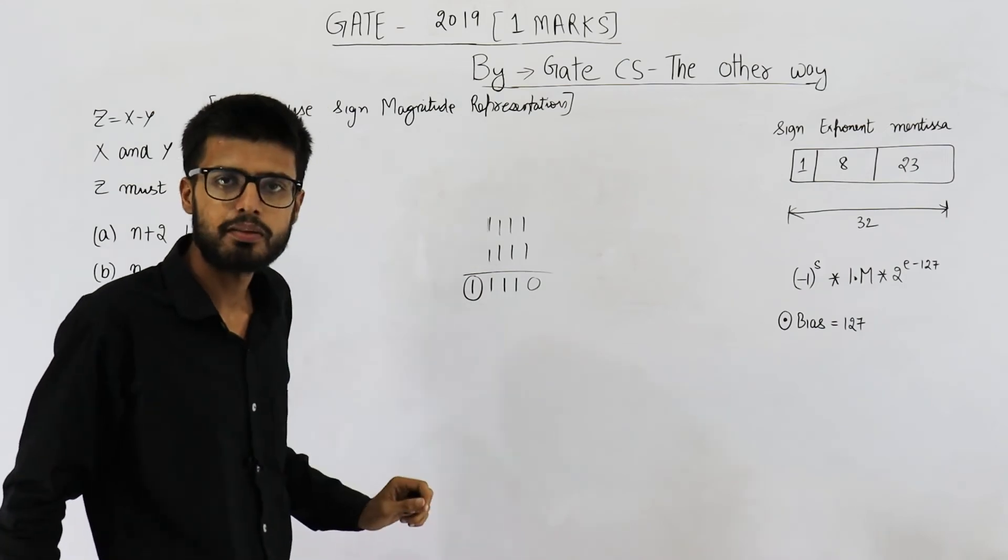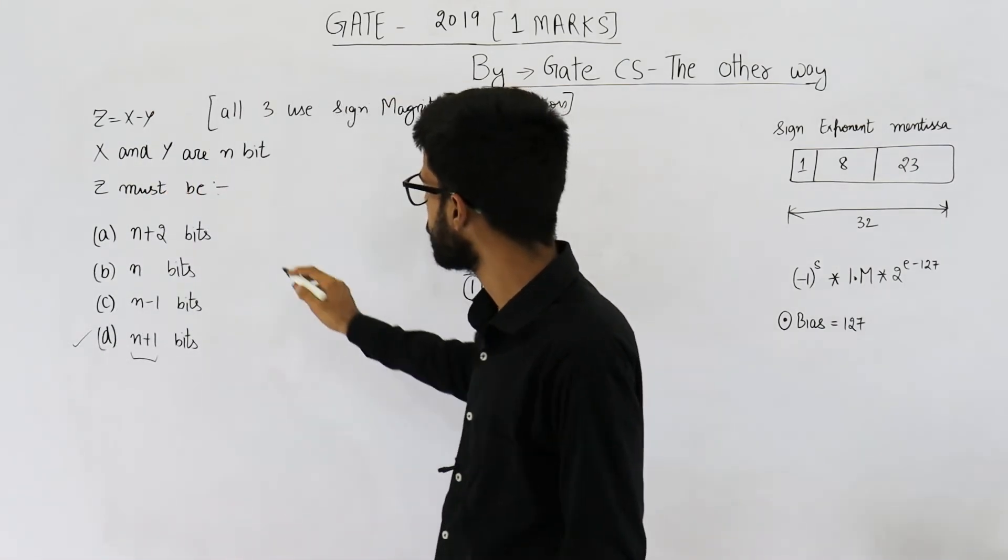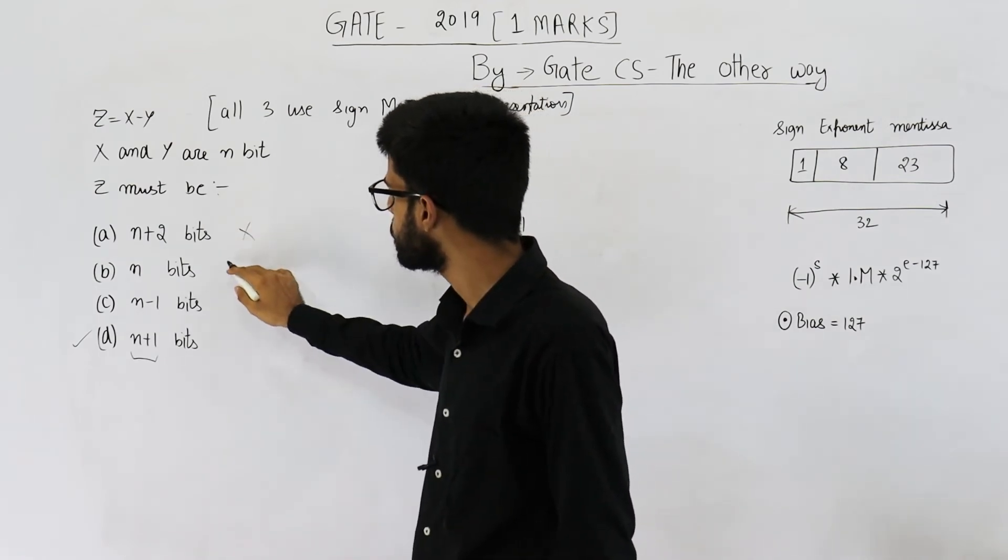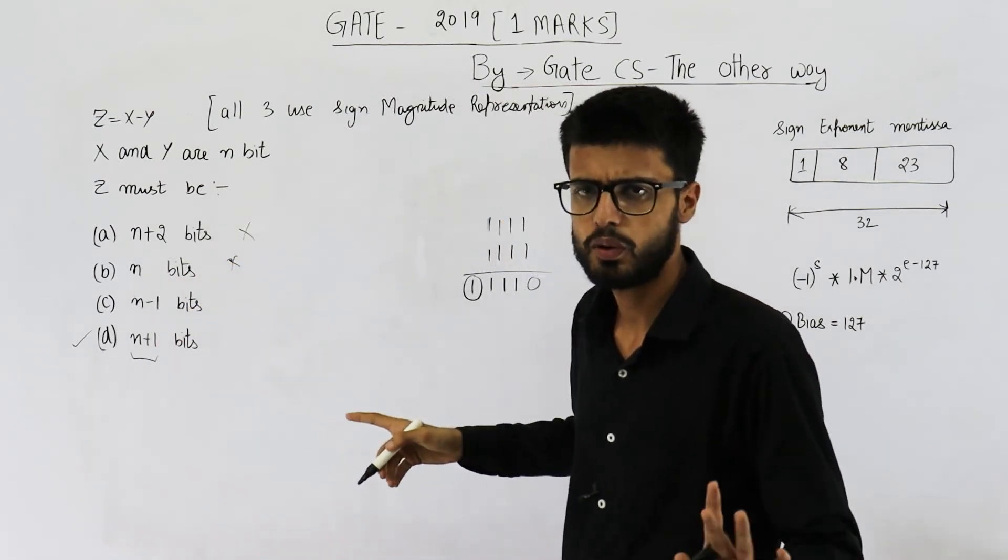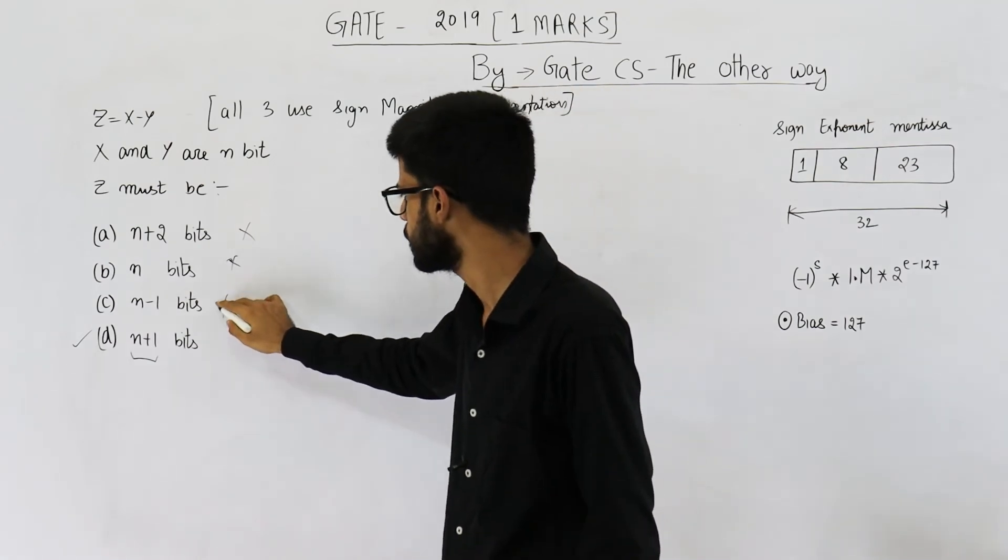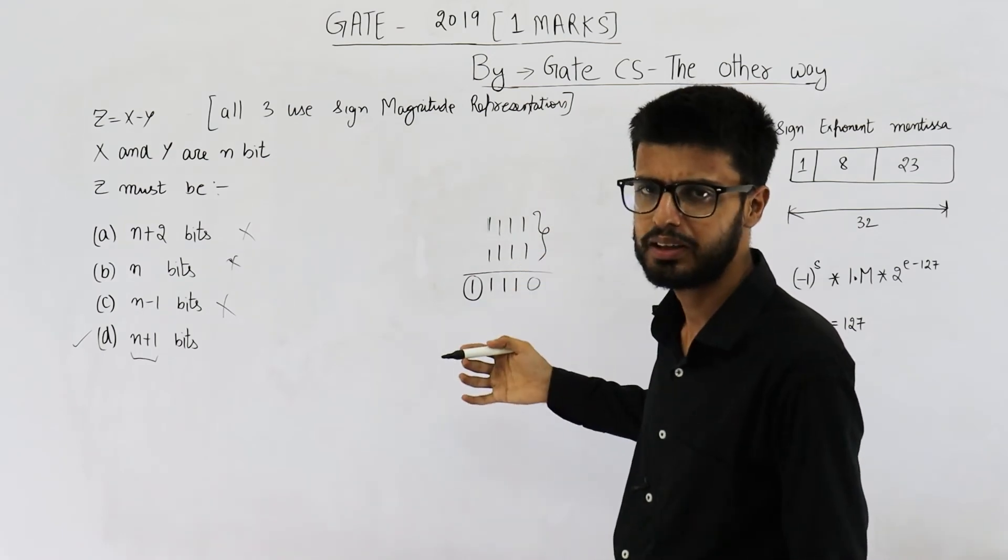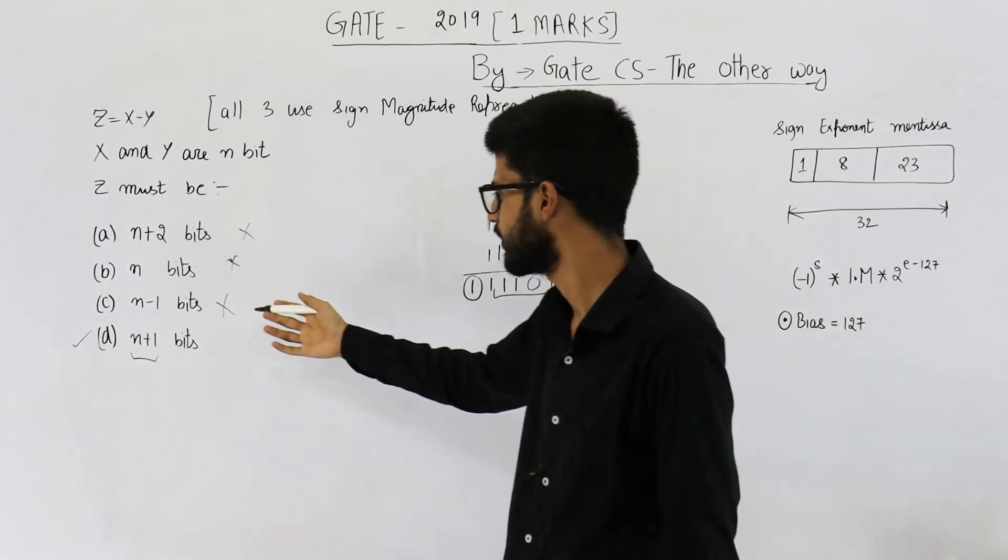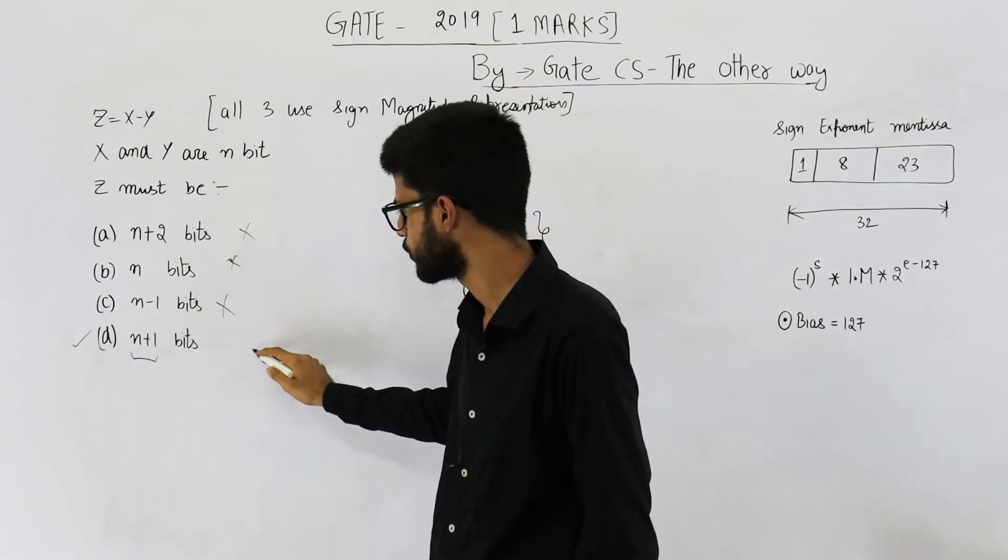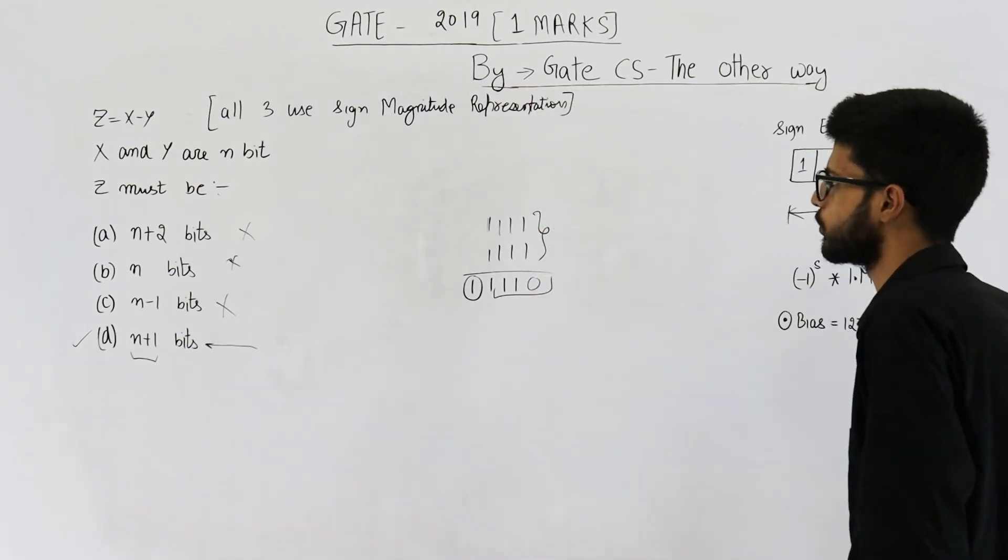So option A is rejected. Option B and C, option B is also rejected because there is an overflow of 1 bit possible. Option C, it doesn't make any sense. They are saying you add 2 n bit numbers and only n minus 1 bits are required. So this is just written to confuse you. So your answer is obviously n plus 1. We have right now proved it also.